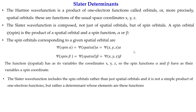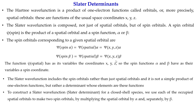The Slater wavefunction includes spin orbitals rather than spatial orbitals, and it is expressed not as a simple product but as a determinant. To construct a Slater wavefunction — a Slater determinant for a closed-shell species — we use each occupied spatial orbital to make two spin orbitals. One spatial orbital gives two spin orbitals, since the spatial part (same principal, azimuthal, and magnetic quantum numbers) is the same and only the spin differs. One spatial orbital therefore corresponds to two spin orbitals — one alpha and one beta.